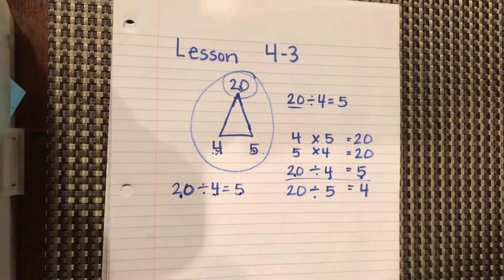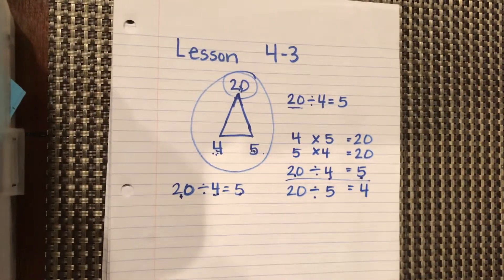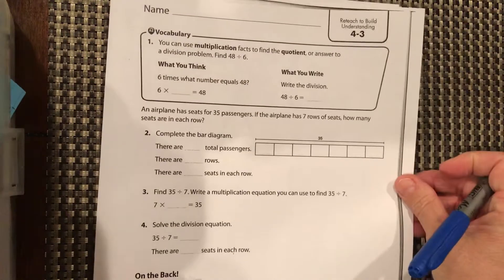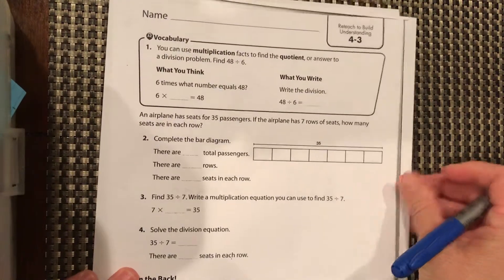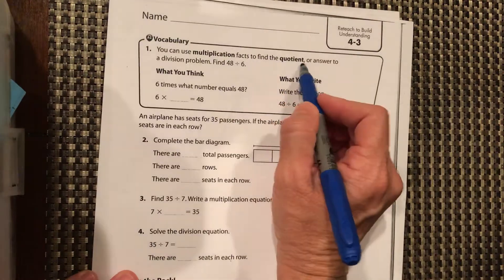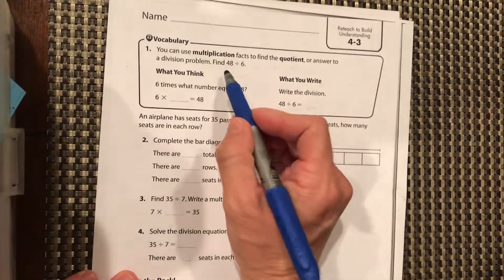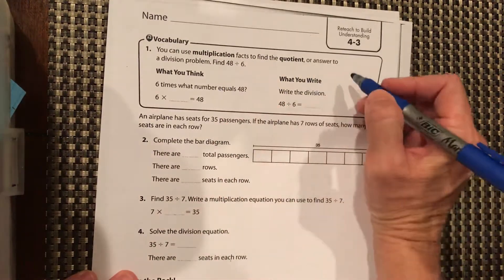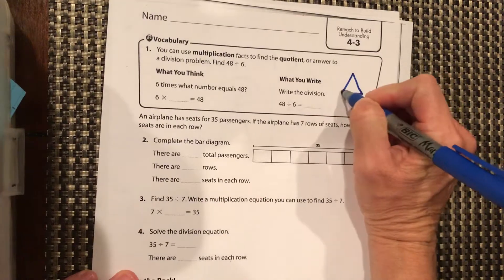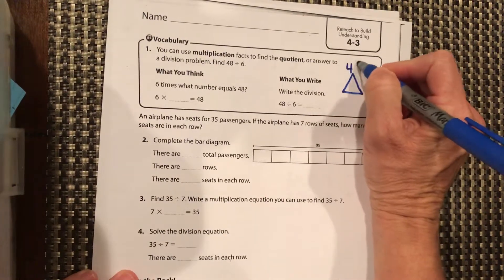So let's take a look at our worksheet. Okay, we can use our multiplication facts to find the quotient, which is the answer to our division. So we want to find 48 divided by 6. So draw your little pyramid over here. We put 48 at the top.